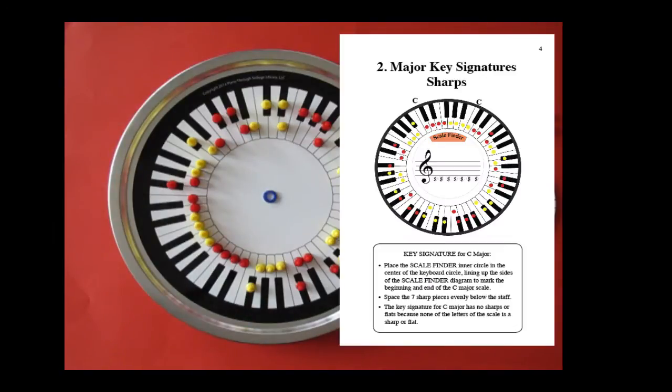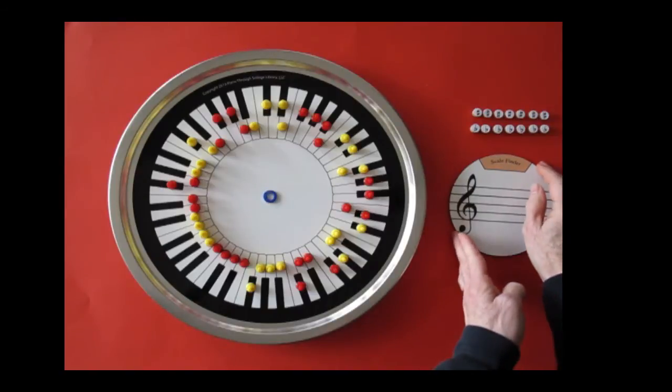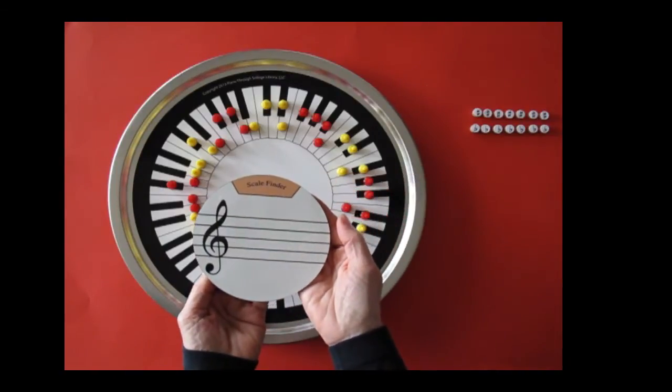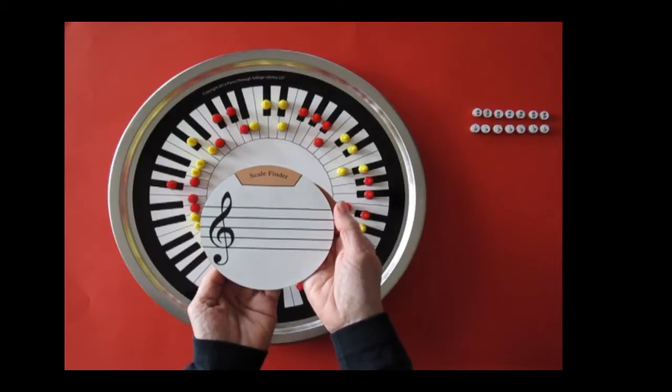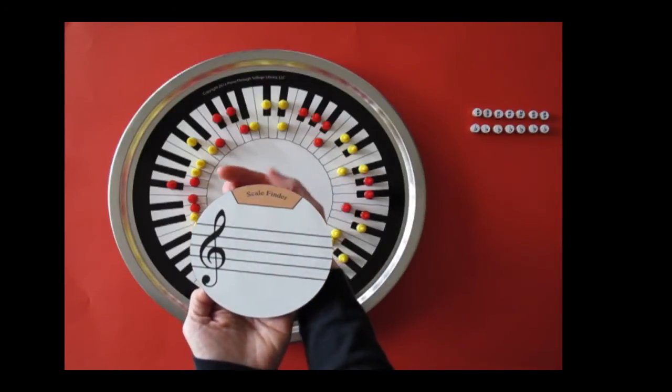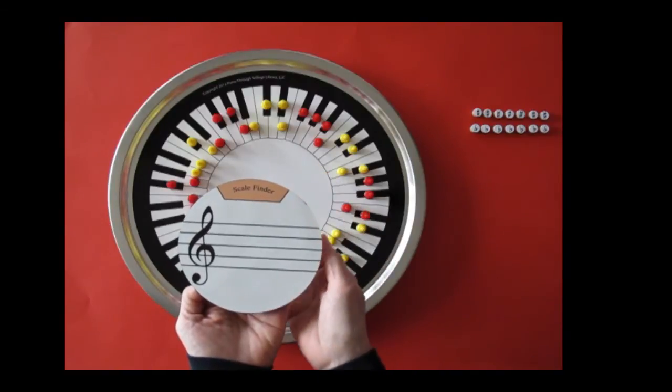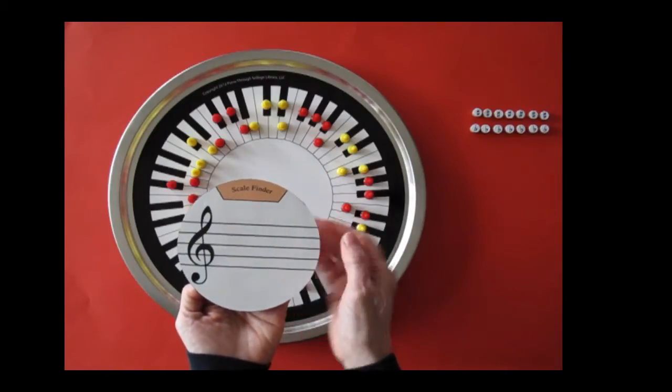Major key signatures with sharps. This activity uses the inner circle. Above the treble staff is a diagram called the scale finder.